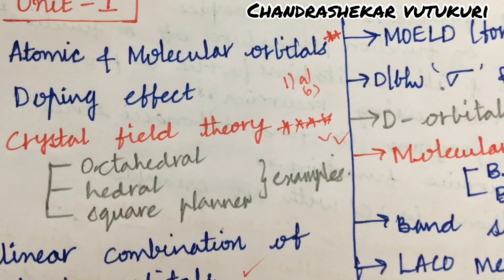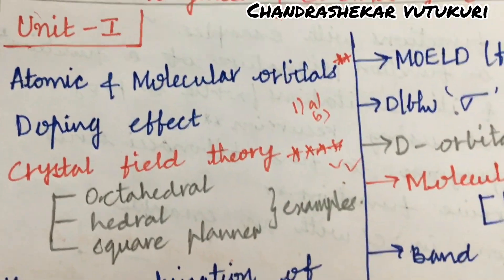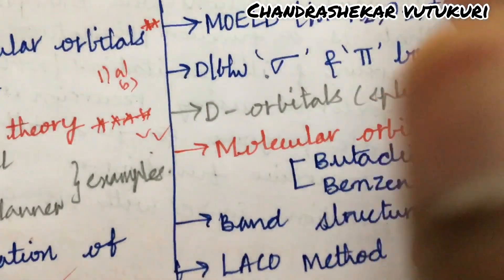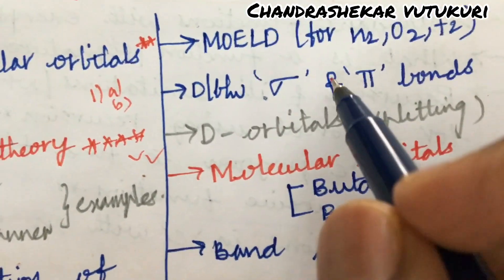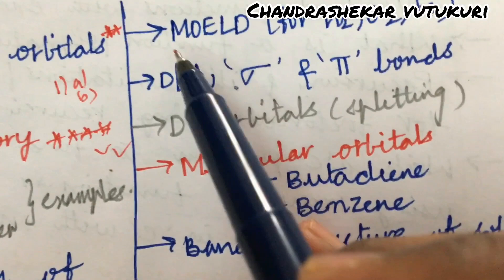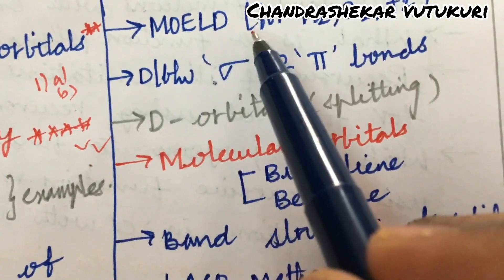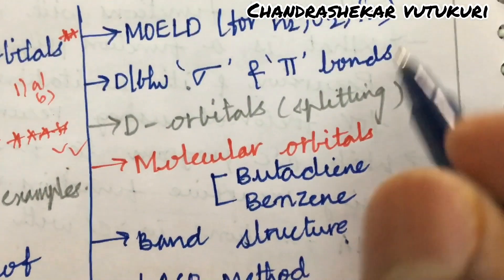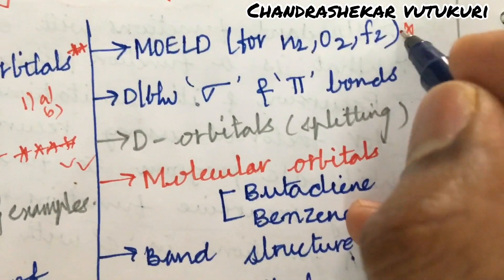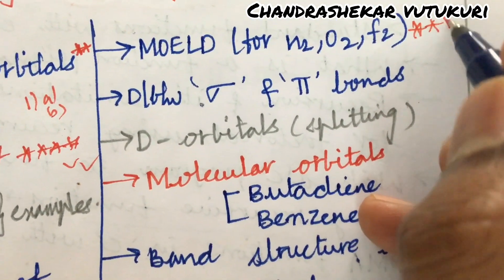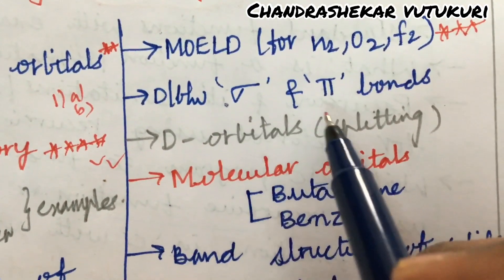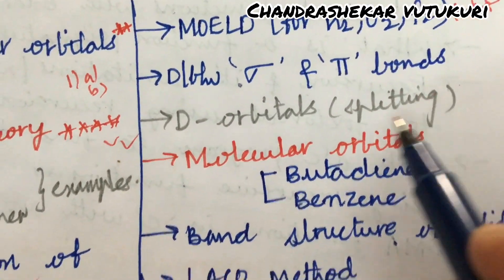Sometimes from unit 1 they are going to ask only one and a half questions. I will let you know from which unit how many questions they are going to ask. MO diagrams for N2, O2, and F2 are also said to be topmost gunshot questions, and the difference between sigma and pi bonds.